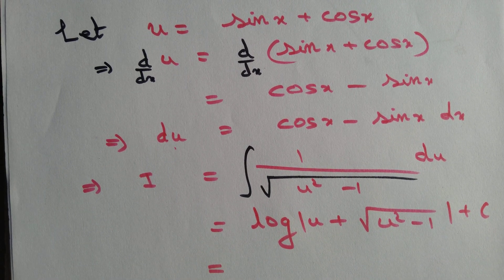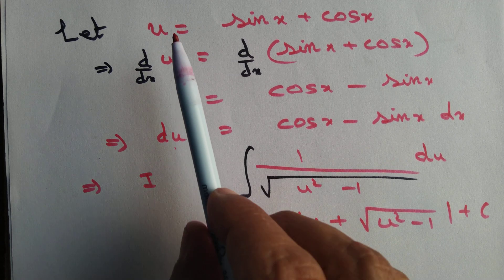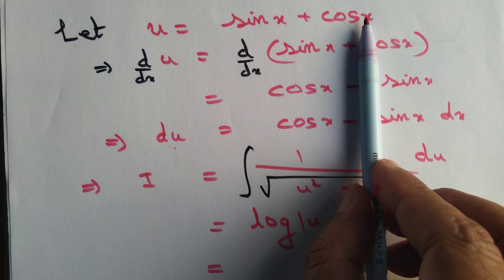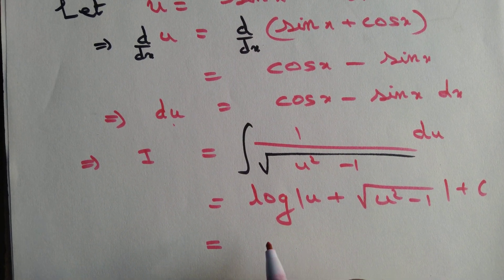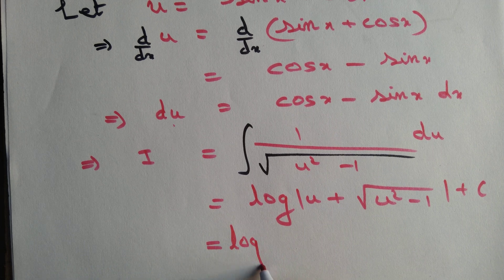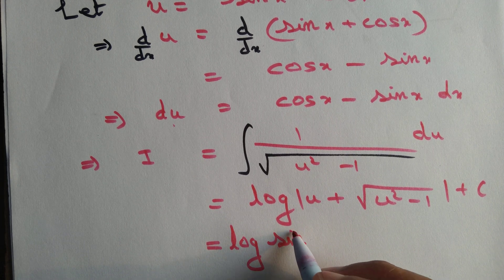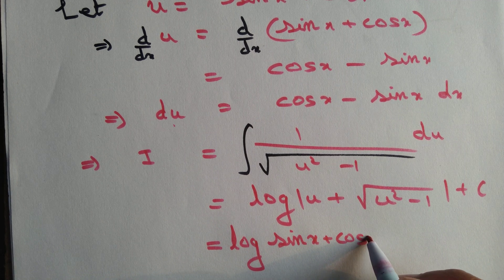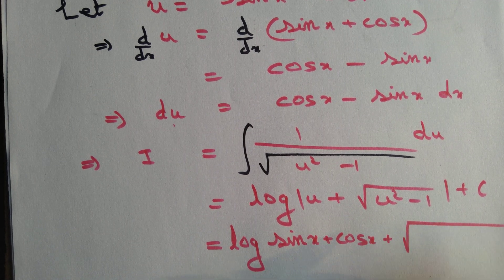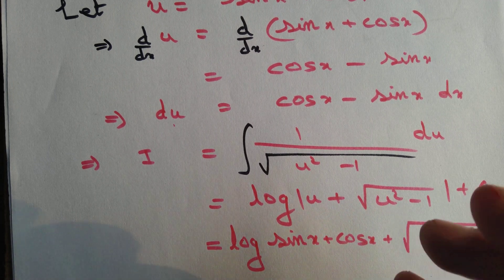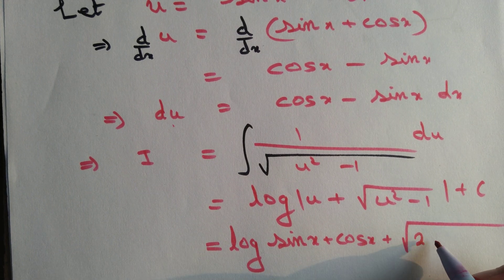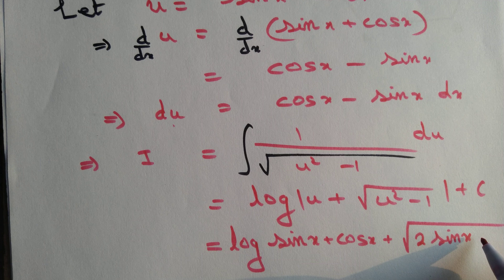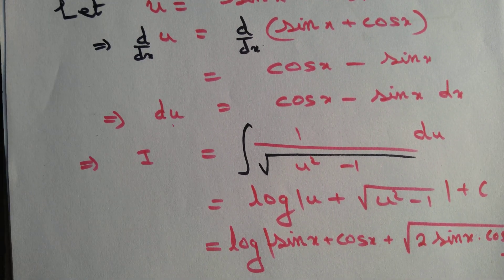Of course, initially we did not have u — we had sin x plus cos x. So lastly, we replace u by sin x plus cos x. The final answer is log of (sin x + cos x) plus the square root of (sin x + cos x)² minus 1, plus a constant of integration.